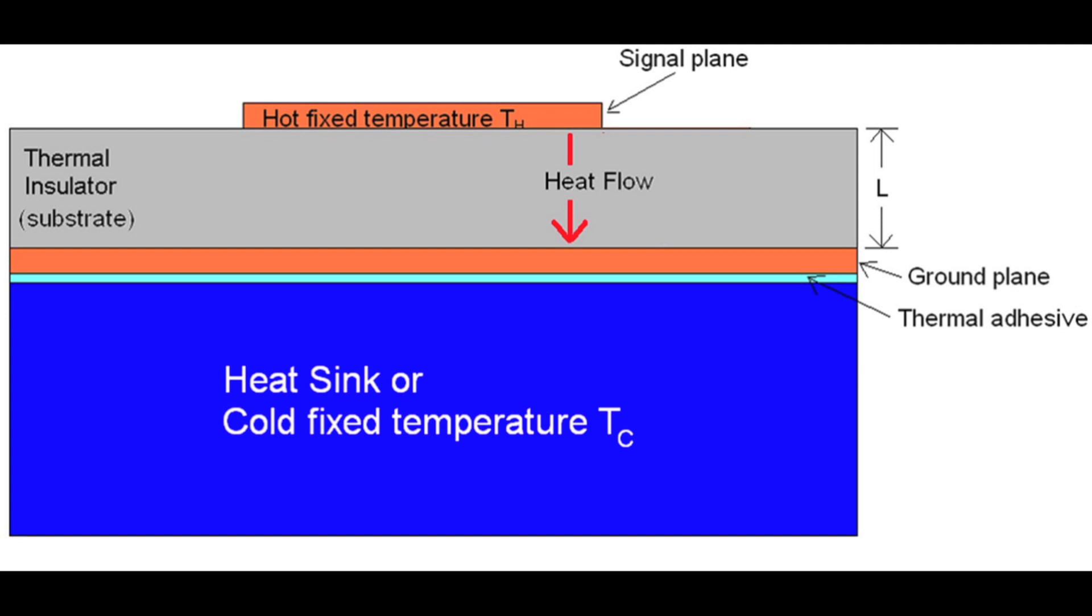The ground plane is attached to a heat sink which is acting as the cold reservoir. The heat flow going through the substrate, the substrate acting as a thermal conductor. In reality, substrates in the printed circuit board industry are not very good thermal conductors; they're actually more of a thermal insulator.